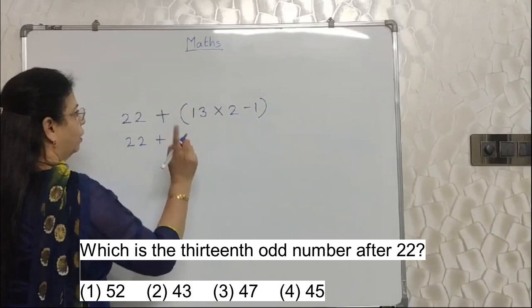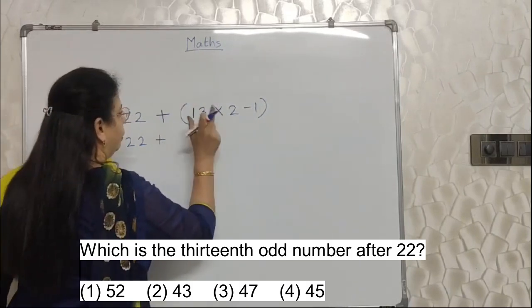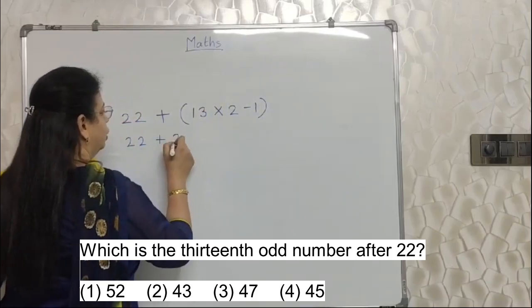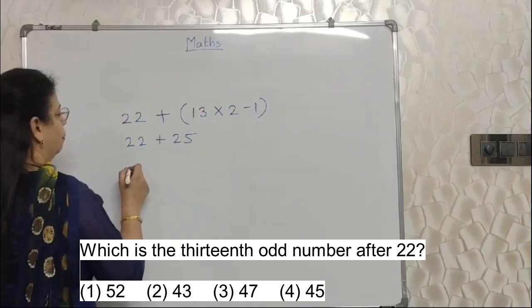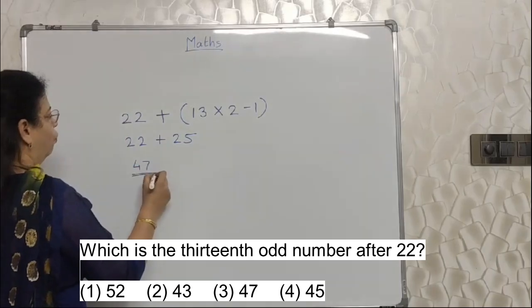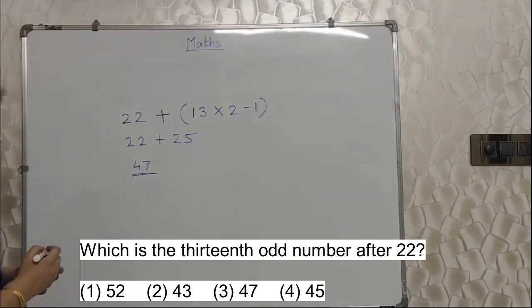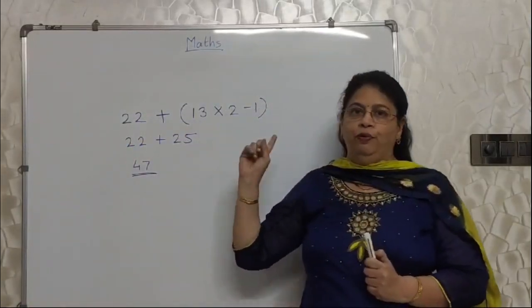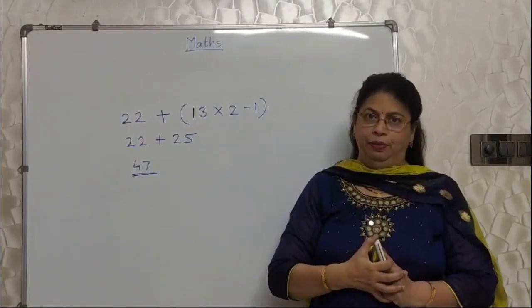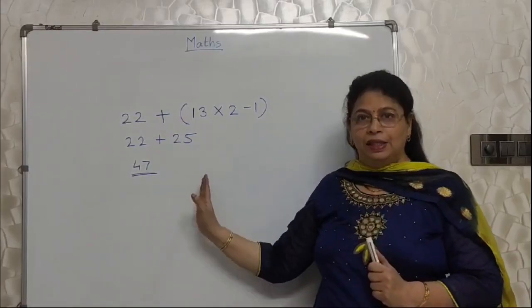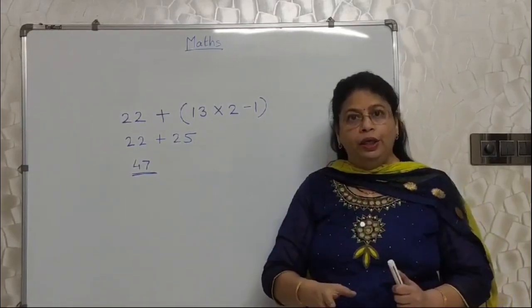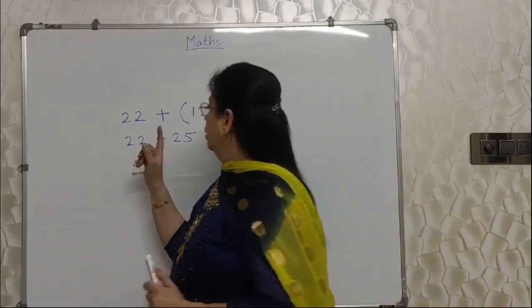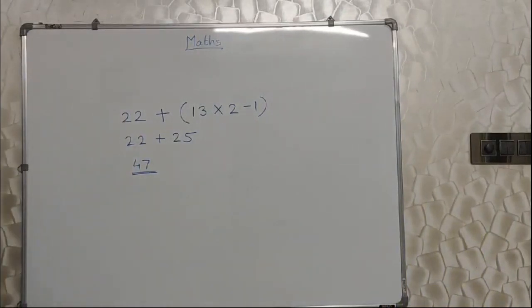BODMAS again. Bracket wala pehle solve karna hai. In that also multiplication first. 13 into 2, 26. Minus 1 is 25. Then simple addition. 47. 47 is the answer. In past question papers, this type of questions they have asked many times. So please revise this again. In case you have not understood it, please let me know in the comment section. Very easy formula. Chalo, aage badate hai pa chalo.